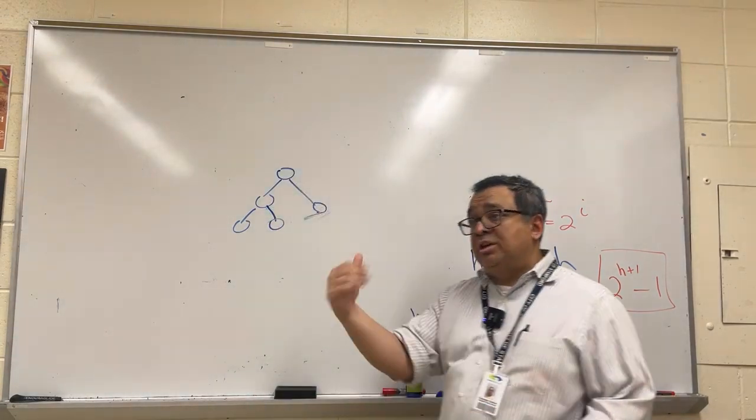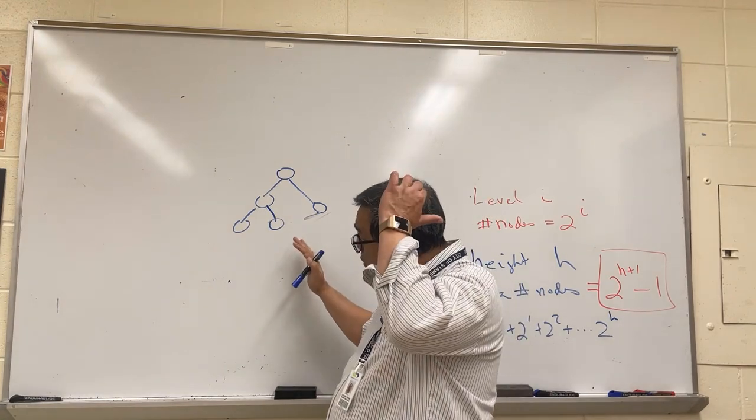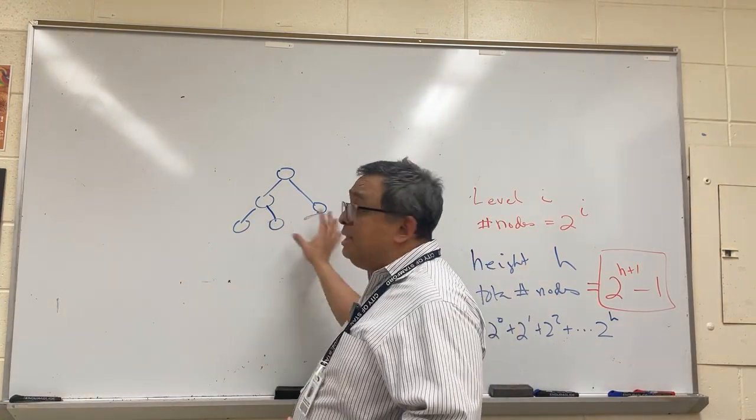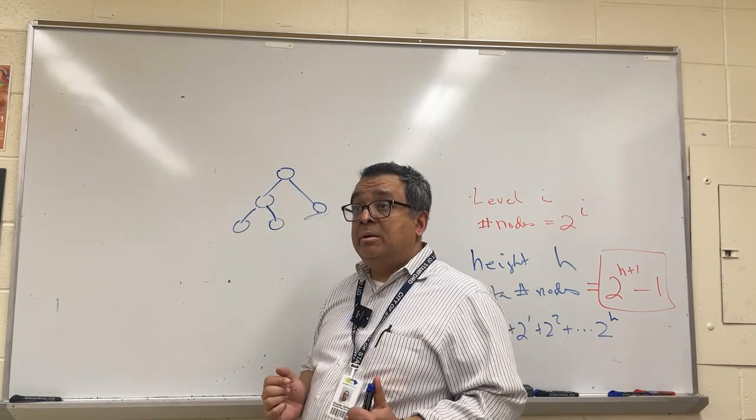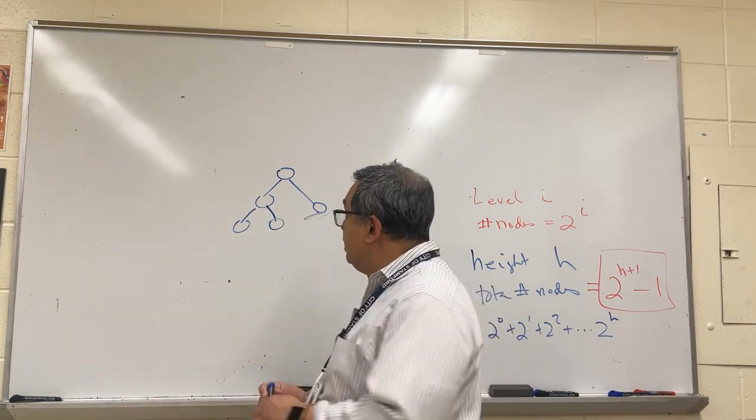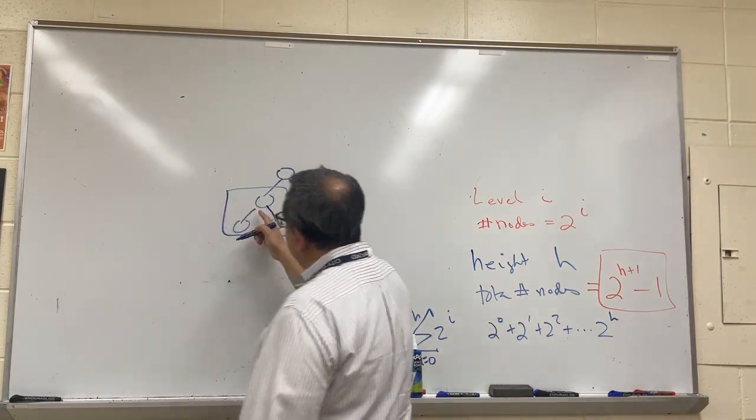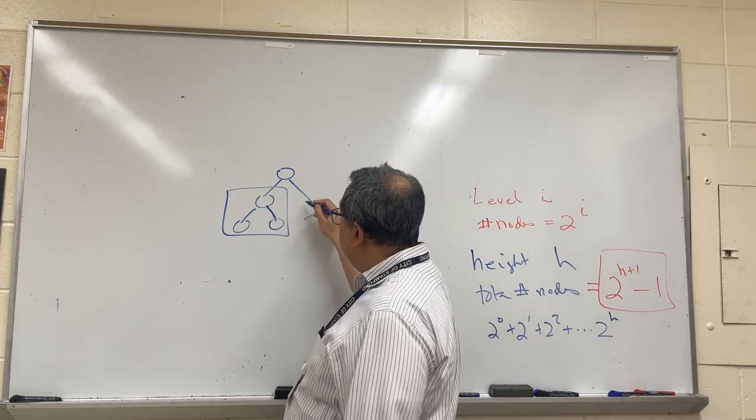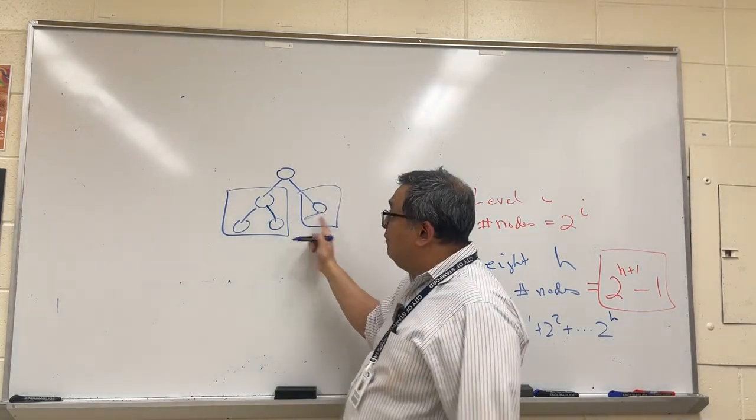Here is the definition of balanced: I want to have the tree be in such a way that if I pick any subtrees on the left and right, the difference in heights is at most one. You can see for this node, for example, that this subtree has a height of one and this subtree has a height of zero. Therefore, the difference at most is one.